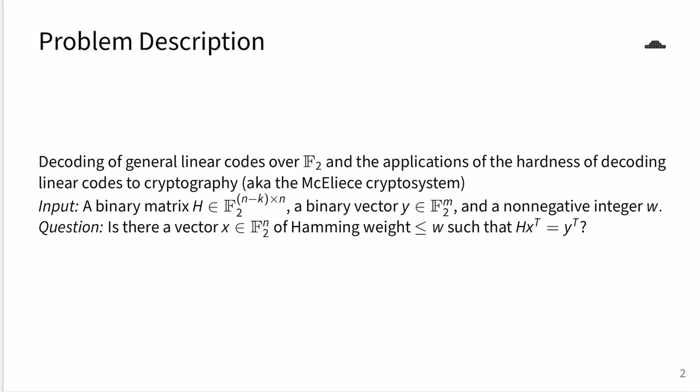Our input is a binary matrix H in F2 with dimensions n minus k by n, a binary vector Y in F2^m, and a non-negative integer w. Our question is, is there a vector X in F2^n of Hamming weight less than or equal to w such that HX transpose equals Y transpose?